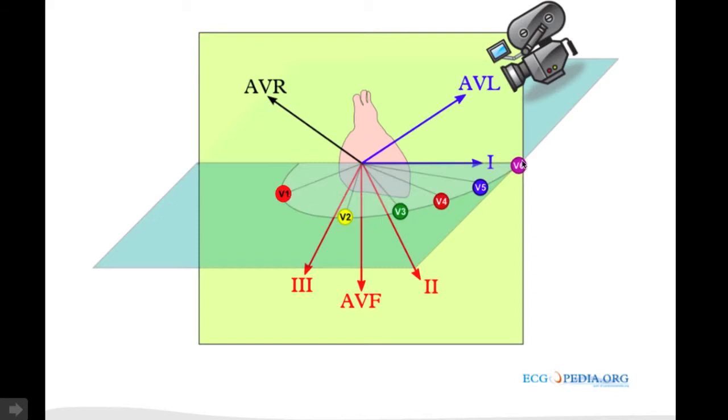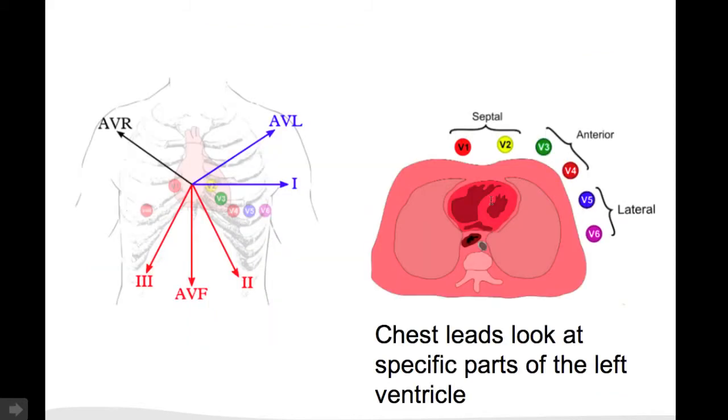V1 to V6 are the chest leads and they look in the horizontal plane, especially to the left heart chamber.